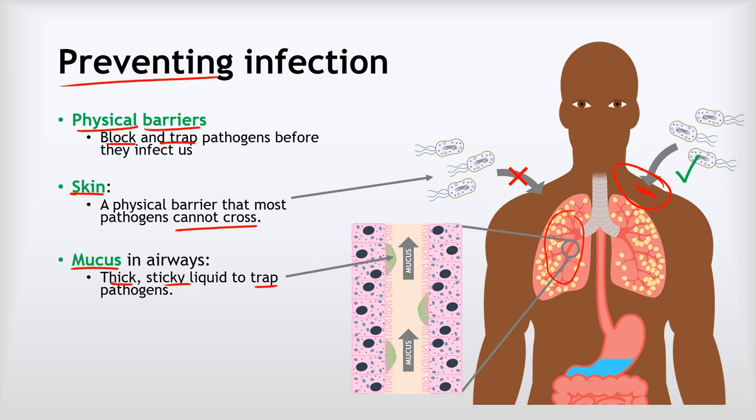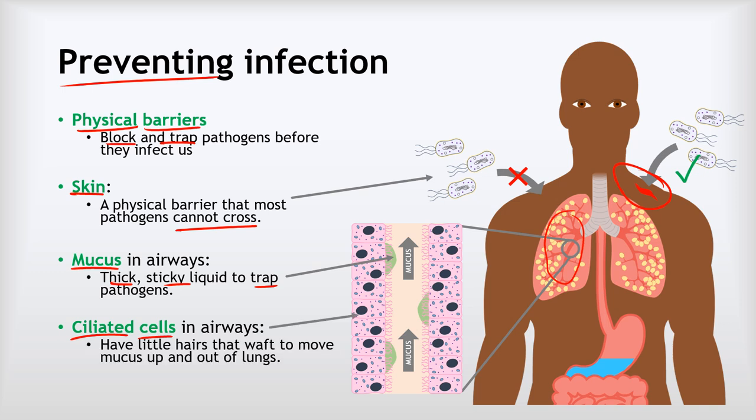If that mucus were to stay put, there's still a chance those pathogens could infect us. So we also have the ciliated cells in our airways. The ciliated cells have all these little hairs on them, and those hairs are constantly waving and wafting, moving all that mucus up and out of our lungs and into our throat. We've all had the experience of coughing up some mucus or phlegm — you can either spit it out or swallow it, but either way it will prevent the pathogens trapped in it from infecting us.